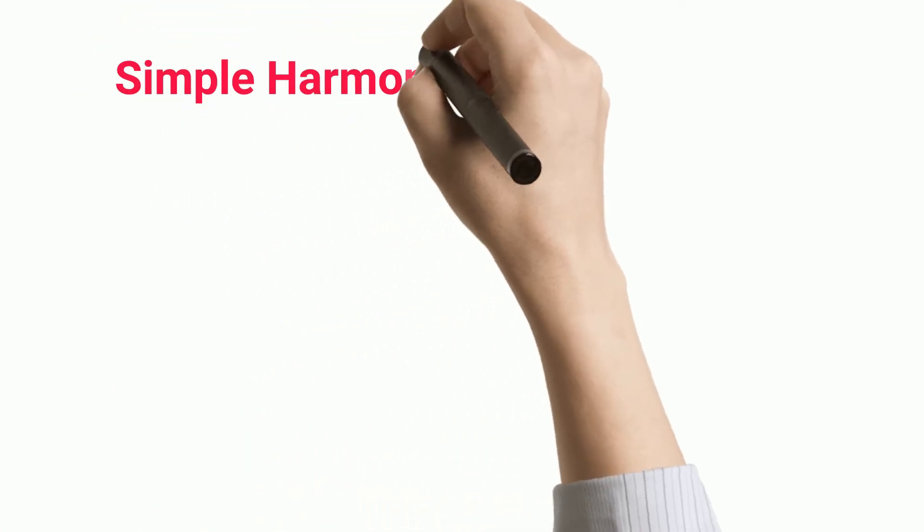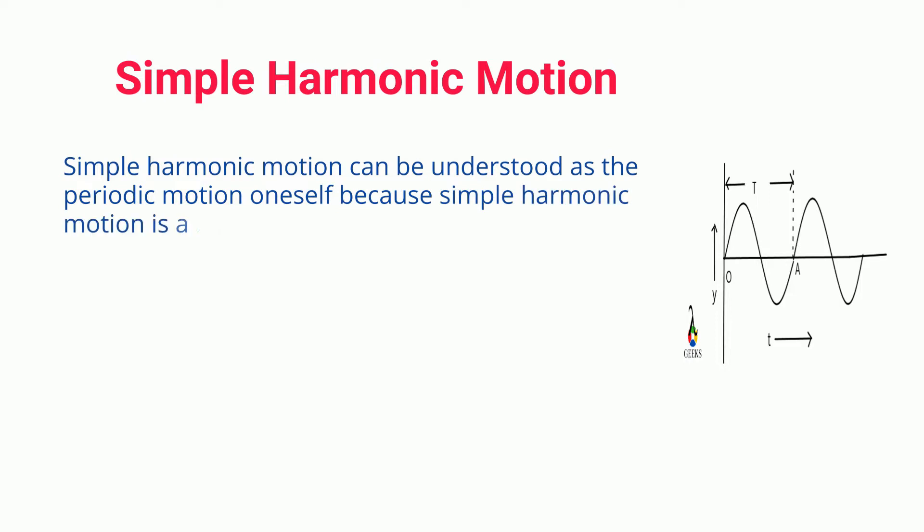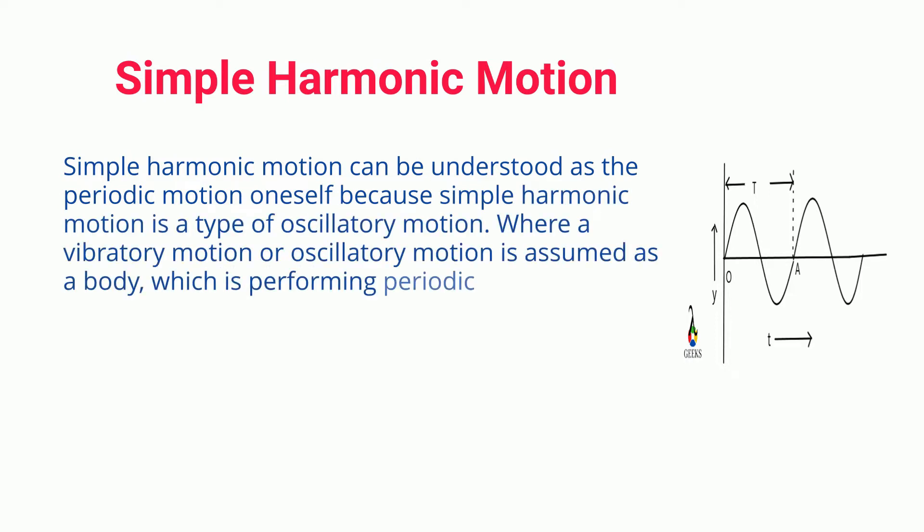Simple harmonic motion. Simple harmonic motion can be understood as the periodic motion oneself because simple harmonic motion is a type of oscillatory motion.